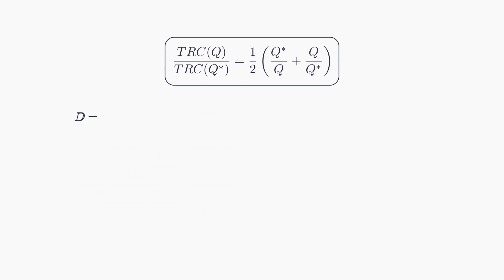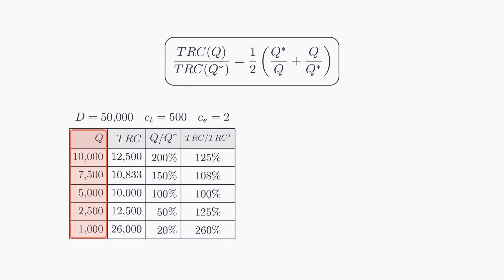Let's look at an example. This table features the variable q along with its respective TRC, the ratio of the variable q to the optimal q, and the ratio of the variable TRC compared to the optimal TRC. Based on the parameters specified above the table, you'll find the optimal policy indicated in this particular row. If we increase the order quantity by 50% above the optimal level, it would result in an 8% increase in the TRC. Conversely, a 50% reduction from the optimal level would lead to a 25% increase in costs. Interestingly, this is the same increase in costs you'd encounter if you ordered twice the optimal quantity.